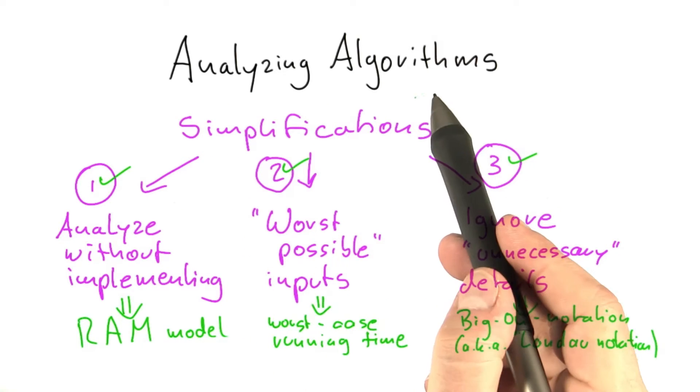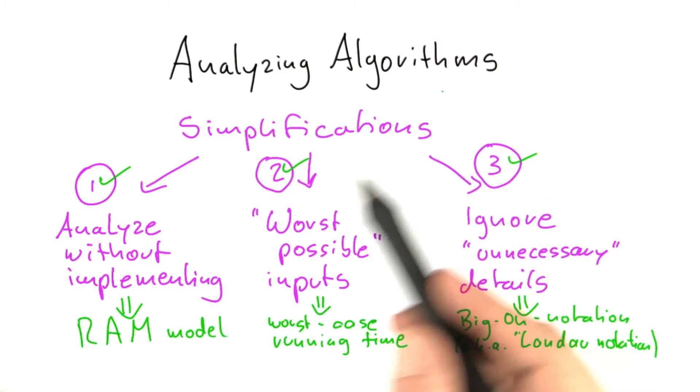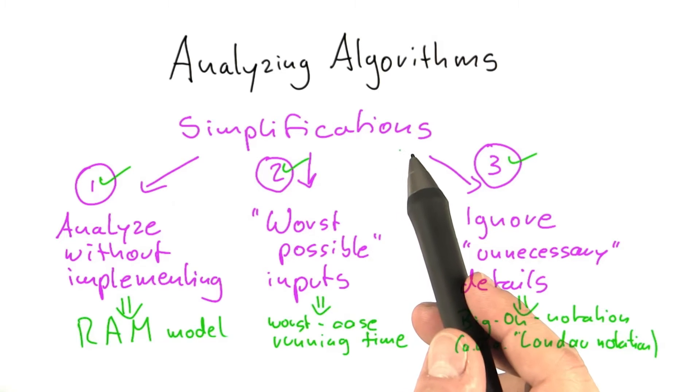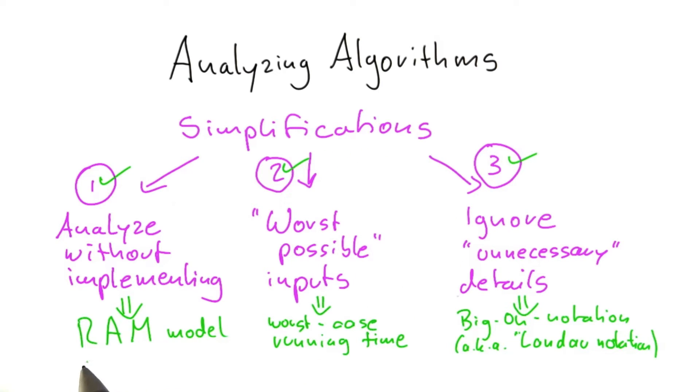So now you've learned about the basics of analyzing algorithms. And we've introduced three simplifications that make our life going forward much easier. The first one was the RAM model so that we can analyze algorithms without actually having to implement them.